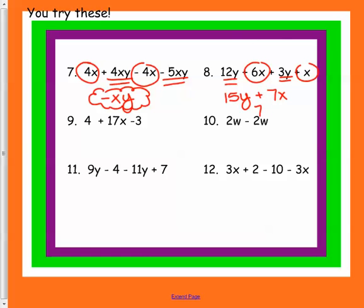Now, I like to put them in alphabetical order. So really, to simplify this, it would be 7x plus 15y because y comes after x in the alphabet. Over here, we have a 4 minus 3, that's 1, so we get 17x plus 1. Over here, they cancel each other out, we're left with 0.